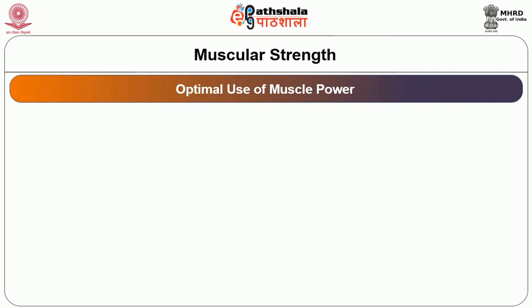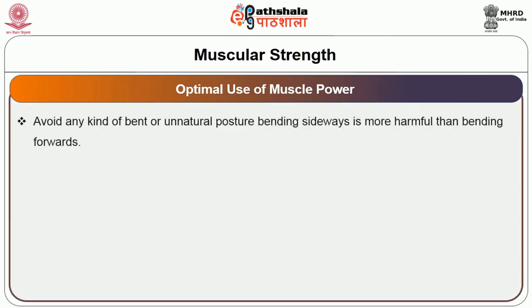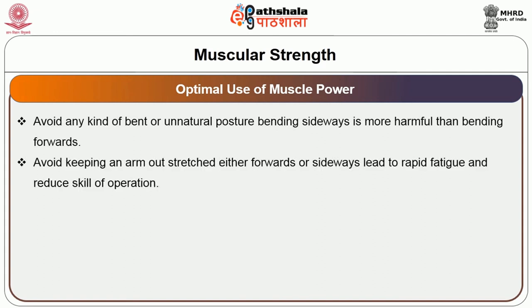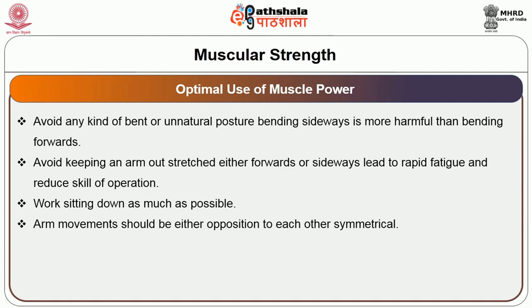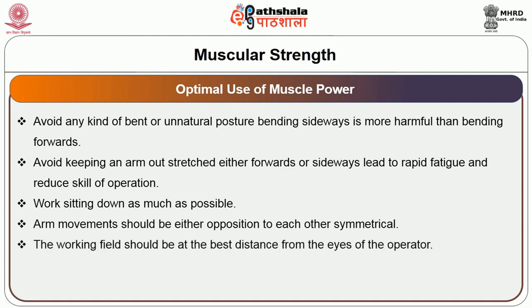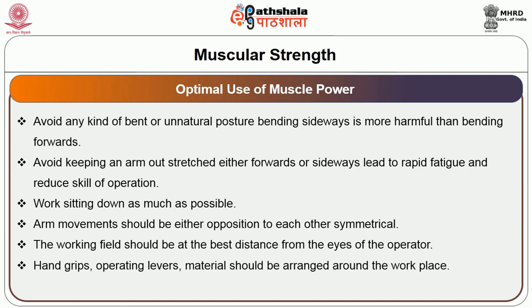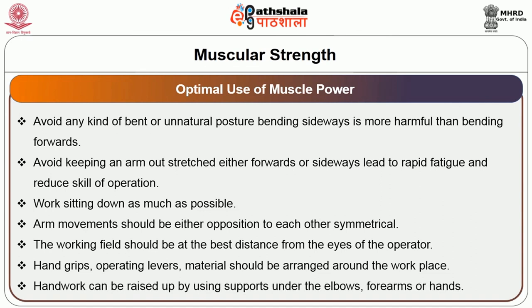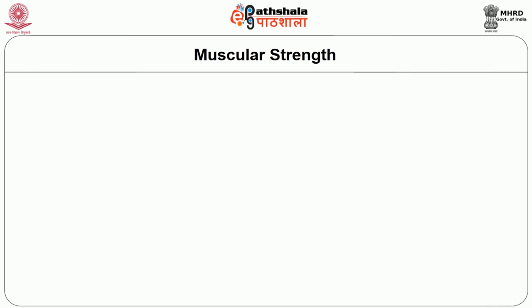For optimal use of muscle power, there are seven guidelines to follow. Avoid any kind of bend or unnatural posture — bending sideways is more harmful than bending forward. Avoid keeping your arms stretched either forwards or sideways as this leads to rapid fatigue and reduces skill of operation. Work sitting down as much as possible. Arm movements should be either in opposition to each other or symmetrical. The working field should be at the best distance from the eyes of the operator. Hand work can be raised up by supports under the elbows, forearms, or hands.